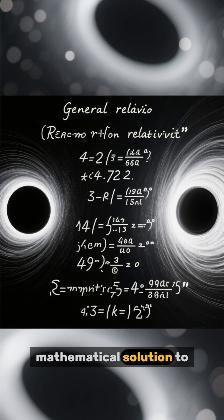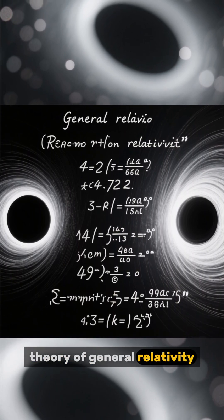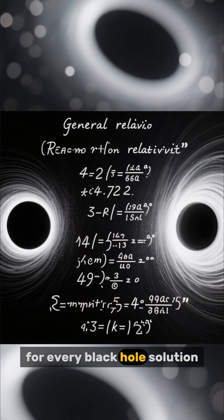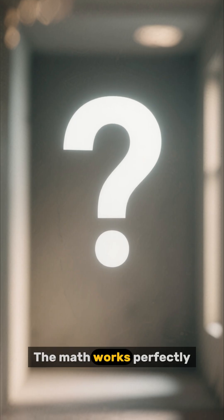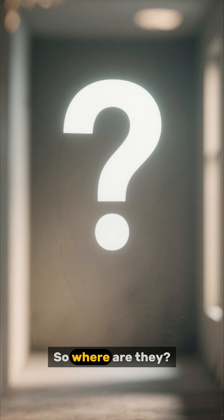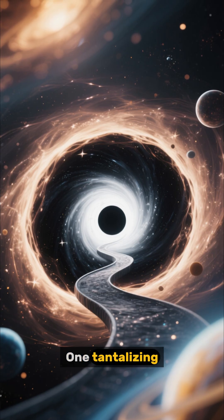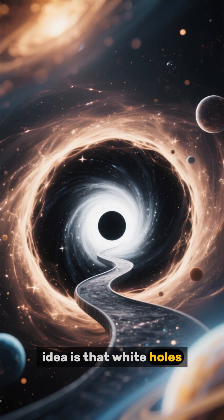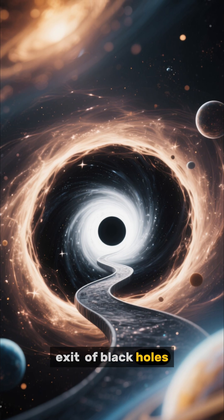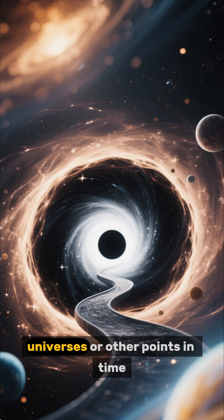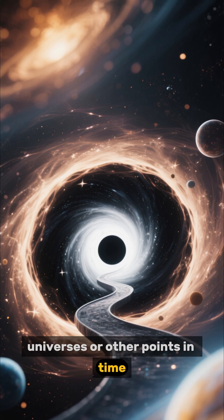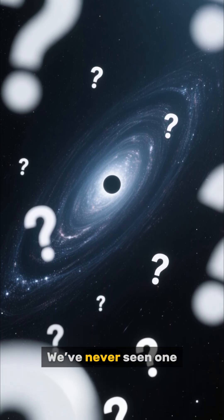They are a valid mathematical solution to Einstein's theory of general relativity. For every black hole solution, there is a white hole solution. The math works perfectly. So where are they? One tantalizing idea is that white holes could be the exit of black holes, connected by a wormhole, potentially leading to other universes or other points in time. The problem? We've never seen one.